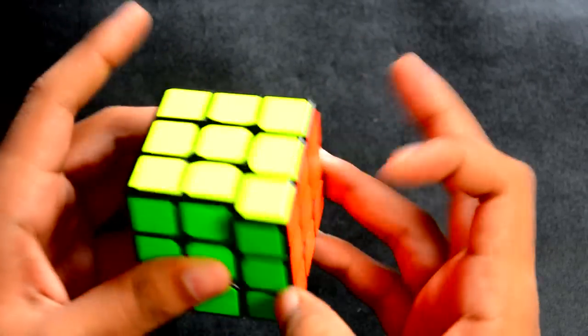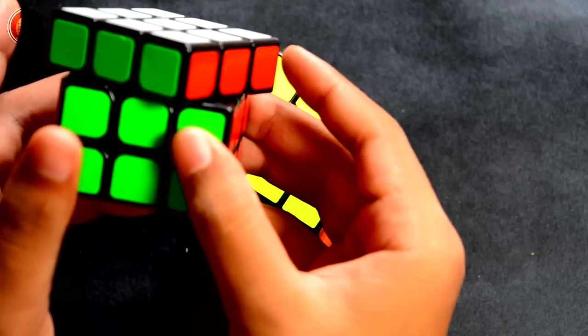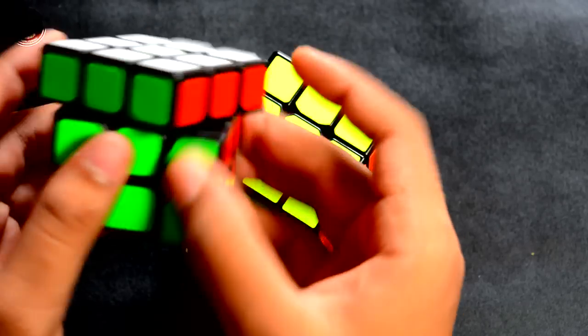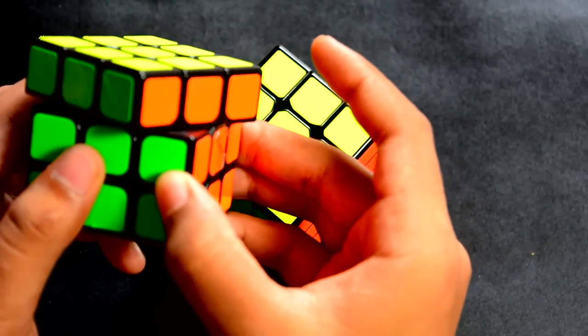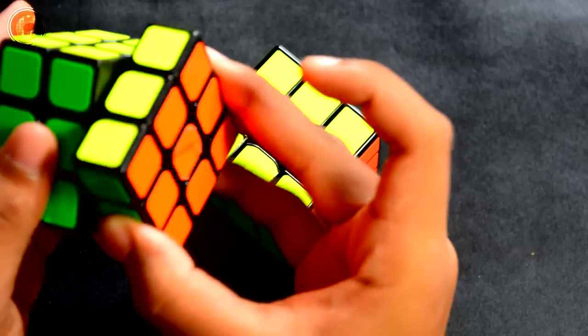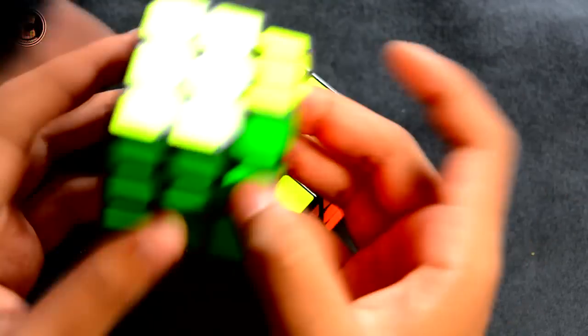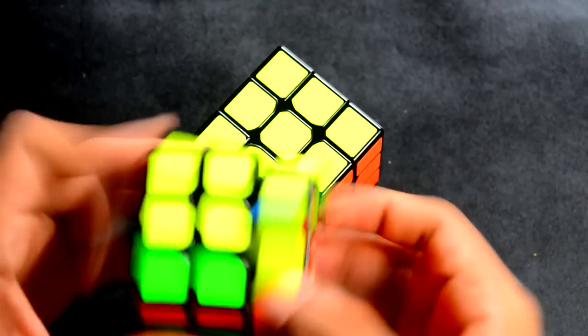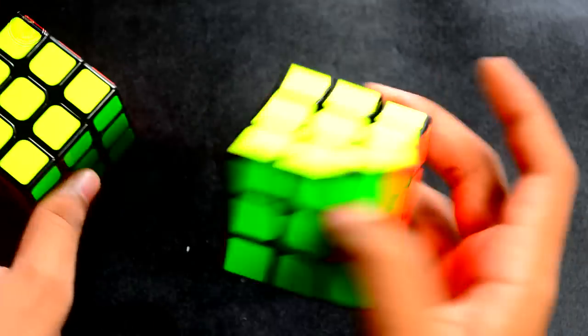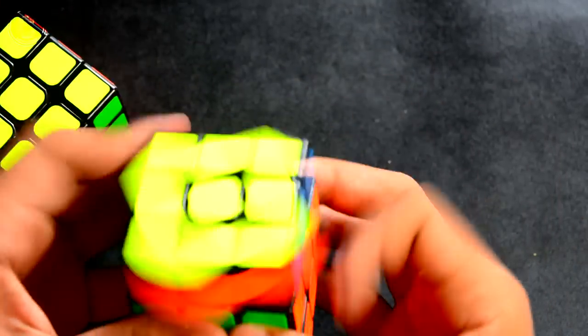However, I don't know if it will be my current main or not. I use the Thunderclap as my current main. And by properly tensioning you can make the Thunderclap reverse corner cut whole line to line. Like this. So that is how good my Thunderclap has become. And Thunderclap is similar to the Aolong v2 in terms of feel.